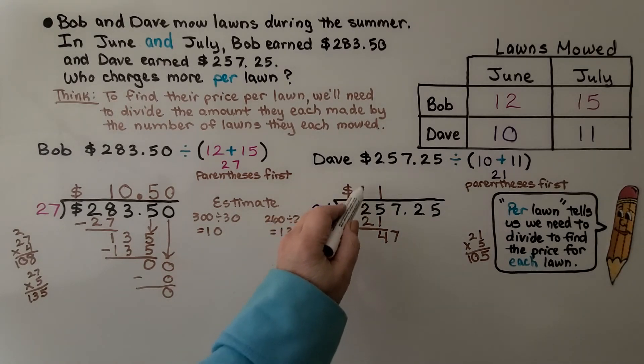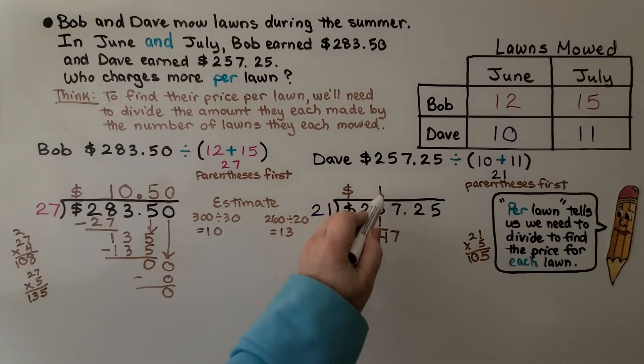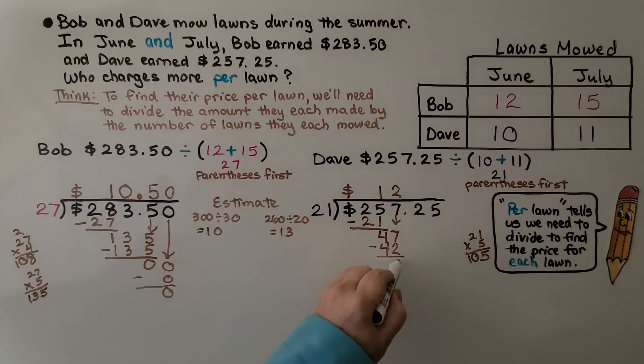21 can't fit into 2, so I didn't write anything there. 21 fits into 25 one time, and 21 times 1 is 21. I subtracted it, got a 4, and then it was the 7's turn to come down. How many times can 21 fit into 47? Well, if we do it 2 times, that's 42. So we know it's going to be 2 times, which is 42. We're going to subtract that. 7 minus 2 is 5. It's this 2's turn to come down.